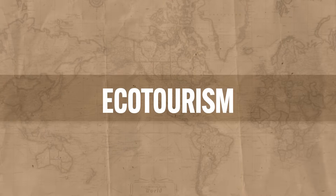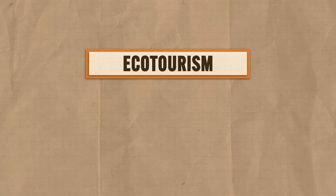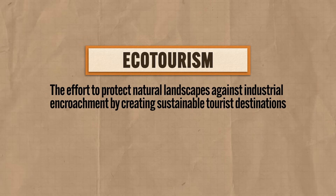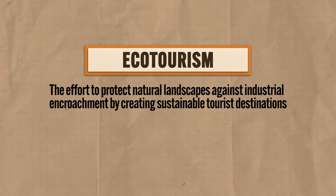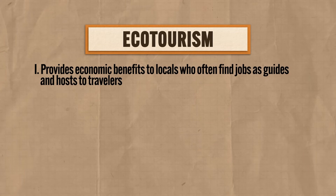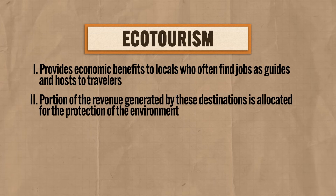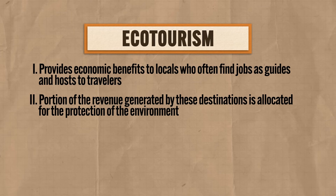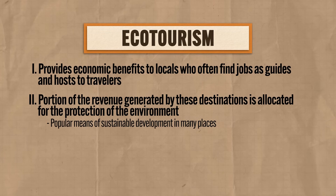The first effort to address these problems in a sustainable way includes the rise of ecotourism, which describes the effort to protect natural landscapes against industrial encroachment by creating sustainable tourist destinations. The whole reason an area industrializes is to create economic growth, so why would keeping industrial practices out of a landscape help the place economically? As it turns out, ecotourism provides economic benefits to locals who often find jobs as guides and hosts to travelers. Additionally, in many ecotourist locations, a portion of the revenue generated is allocated for the protection of the environment, and this has become a popular means of sustainable development in many places.